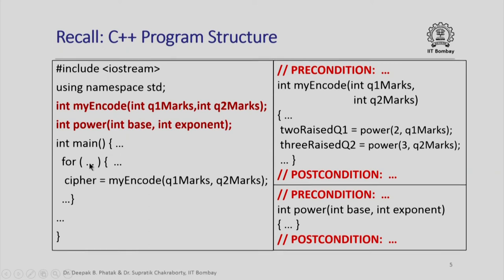In the main function there is a loop iterated for every student where we read in the marks and then call the function my_encode, which takes two integer parameters and returns an integer value giving the encoded version of those two marks. The function my_encode in turn calls a function power to raise 2 to the power of quiz 1 marks and 3 to the power of quiz 2 marks. The function power raises the base to the exponent and returns that value.